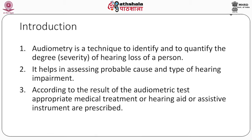Introduction. Audiometry is a technique to identify and to quantify the degree of hearing loss of a person. It helps in assessing probable cause and type of hearing impairment. According to the results of an audiometry test, appropriate medical treatment, hearing aid, or assistive instruments are prescribed. An audiometer is an instrument to carry out the hearing test, and an audiogram is the data plotted in graph format for interpreting the result.